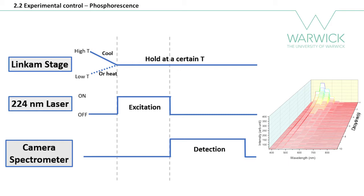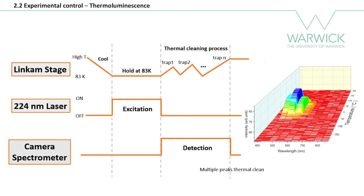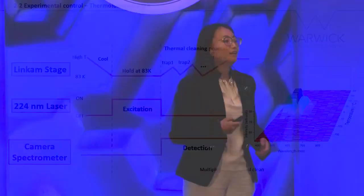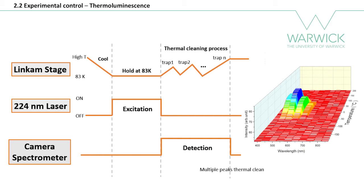For the thermoluminescence experiment, we first cool the sample down to 83 Kelvin. While holding at this temperature, we perform the optical excitation. After that, we heat up the sample and can see the sample glow — the thermoluminescence — and then do the detection. Some traps may have similar activation energies and so their peaks may overlap. There is a method called the thermal cleaning process, which we can use to separate different traps. We heat up the temperature just above the first peak and then cool down and heat to a higher temperature, emptying the first trap so we can separate different peaks.